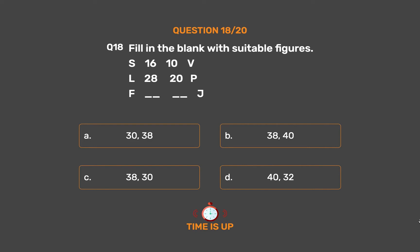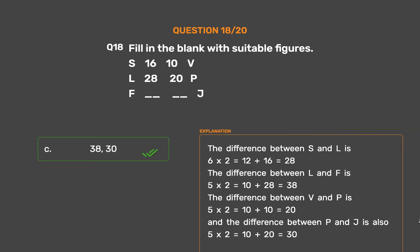The correct answer is Option C: 38, 30. The difference between S and L is 6, so 6×2=12 plus 16=28. The difference between L and F is 5, so 5×2=10 plus 28=38. The difference between V and P is 5×2=10 plus 10=20. The difference between P and J is also 5×2=10 plus 20=30.